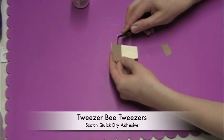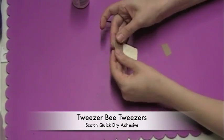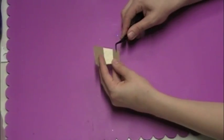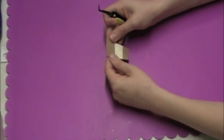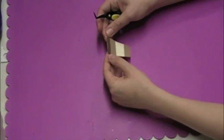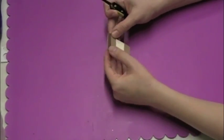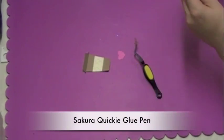So I'm just using my Tweezerbee scissors and my Scotch quick dry adhesive to assemble my cut. I really like this adhesive because it has a nice fine tip on it. Makes it really easy to put things together. So there's the main part of my cut but I have one more tiny little piece.